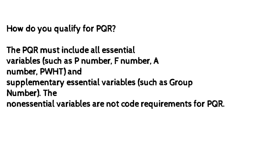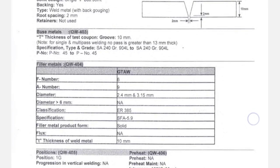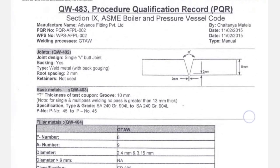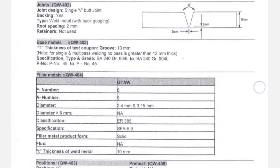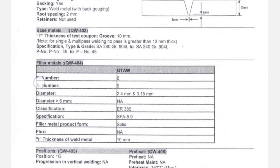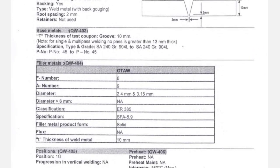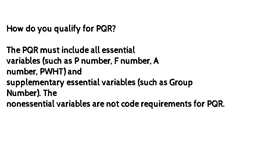How do you qualify for PQR? The PQR must include all essential variables such as P number, F number, A number, PWHT, and supplementary essential variables such as group number. The non-essential variables are not code requirements for PQR.